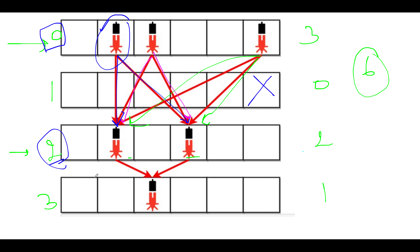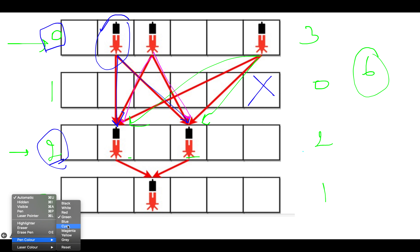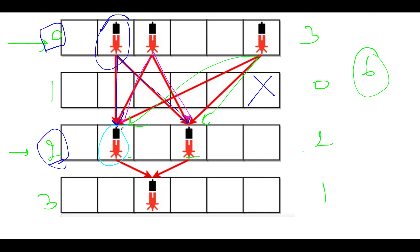How many beams are originating from the second row? There are two security devices placed in the second row. In the upcoming row, the third row, there is only one security device. So corresponding to each security device in the second row, one beam will originate and terminate at that device in the third row. In totality this makes two, and six plus two gives us eight, which is in sync with our expectations.